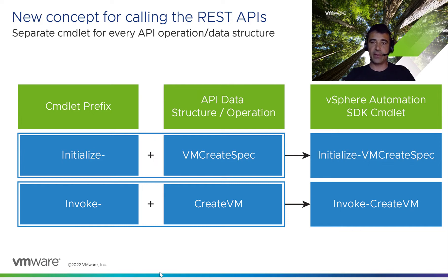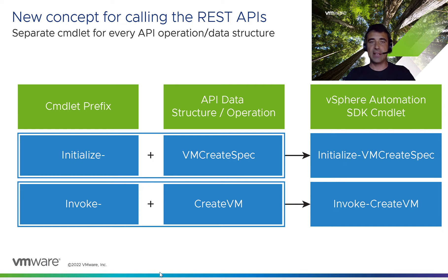For API operations that have complex input objects that you need to pass to them, we also have those initialize commandlets, which are named after initialize and the name of the API data structure. In the case of invoke createVM, you have to create the createSpec object, which you pass as an input of the API operation, and you use the initialize VMCreateSpec commandlet to do that.